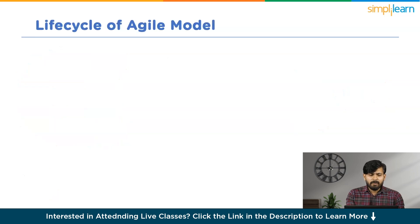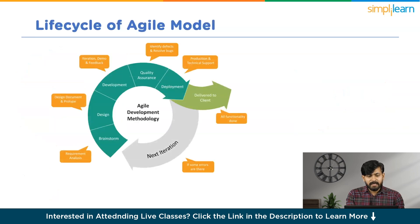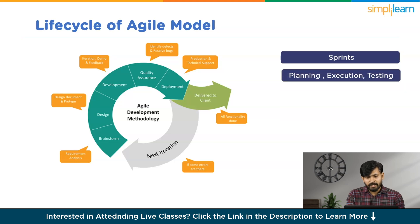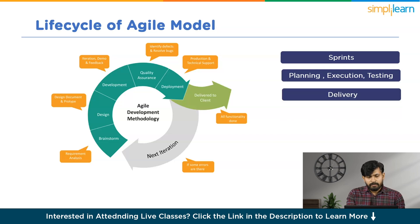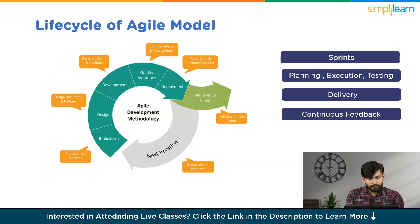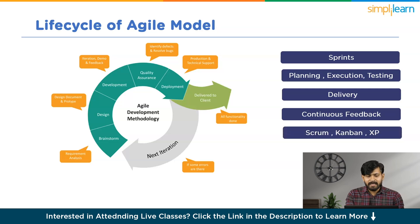The Agile Development Lifecycle is marked by short, iterative cycles known as sprints. These typically last for 2-4 weeks and involve planning, execution, testing and delivery. The iterative nature of Agile promotes continuous improvement as each sprint incorporates feedback from stakeholders. Popular Agile frameworks include Scrum, Kanban and Extreme Programming, which provide specific methodologies for their effective implementation.